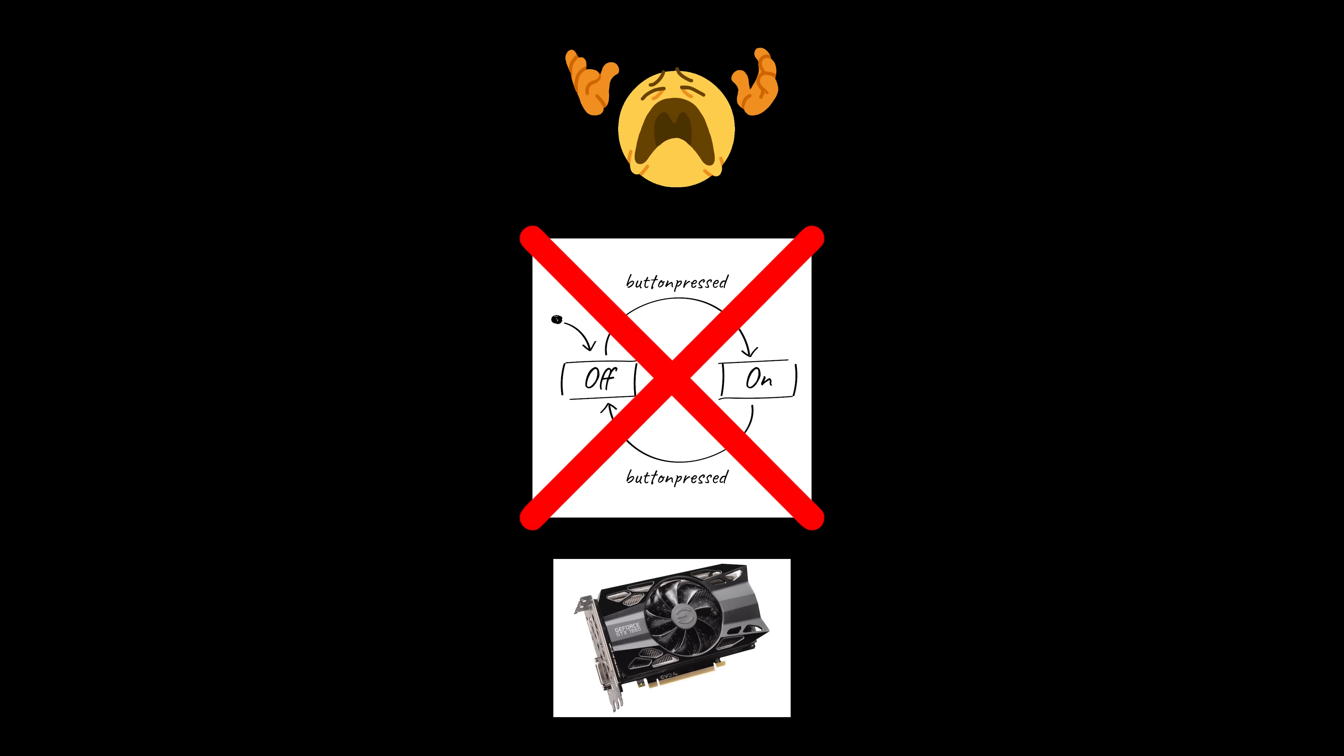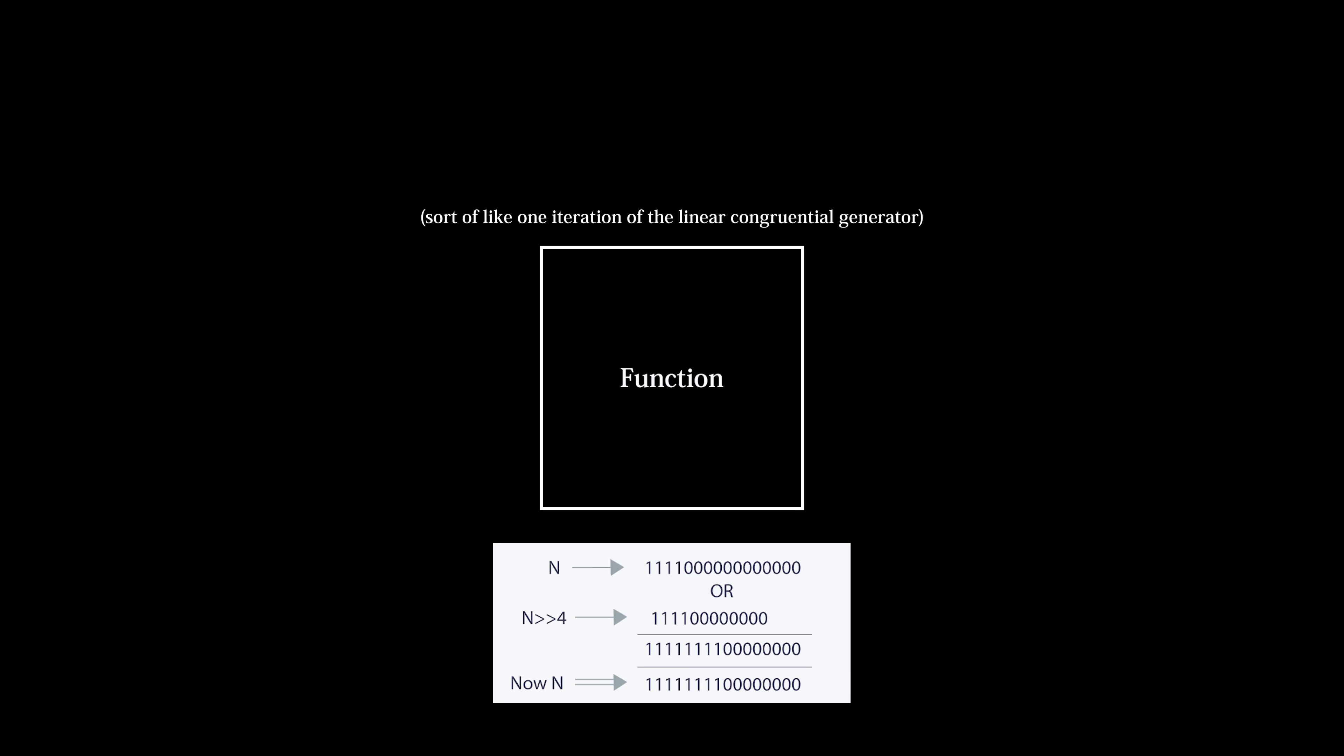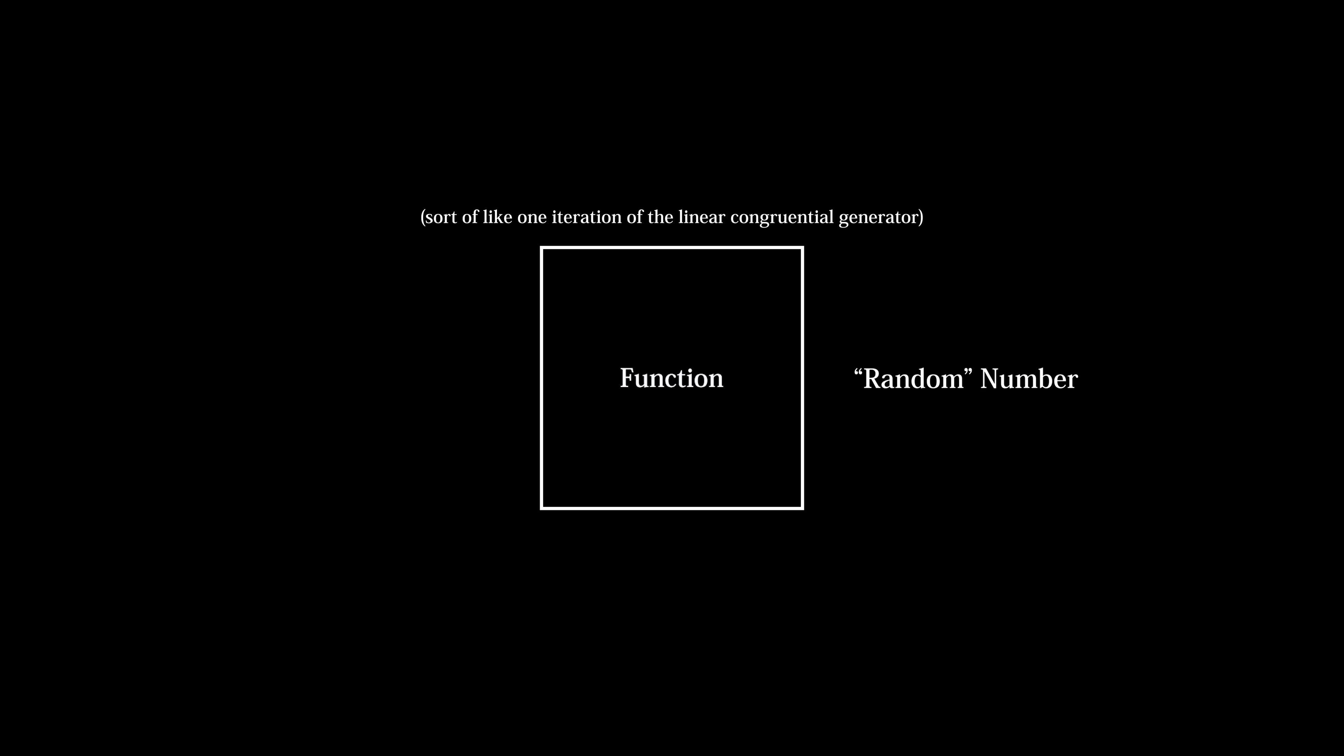But on the GPU, where we will be doing our work today, we don't have the privilege of state, and so when we want random numbers on the GPU, we make use of hashing functions. Hash functions take in a value and shuffle it around a bunch with bit operations and other math operations to create a seemingly random value from the input.